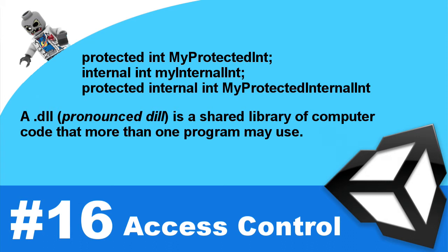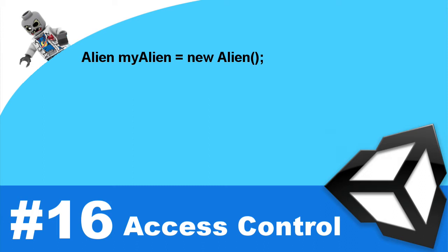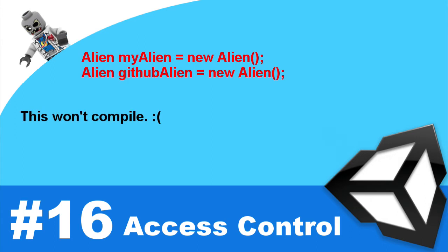Now let's move into another topic related to access modifiers: namespaces. What are namespaces? We have an alien object here that we've defined. But what happens if we incorporate code from another project — say we found something awesome on GitHub and bring it into our Unity project, and it also has a struct called alien? The compiler won't know what to use. We'll get a compiler error because it can't determine which alien is being referenced. To get around this, we have the concept of a namespace. A namespace allows us to create our own objects without worrying about this type of collision — a namespace collision.